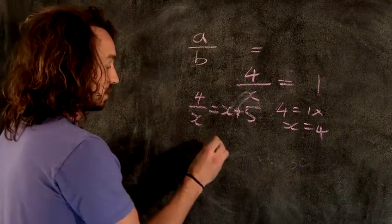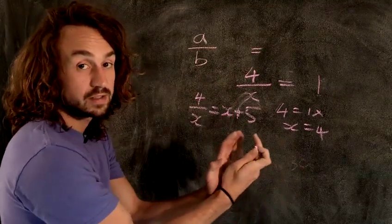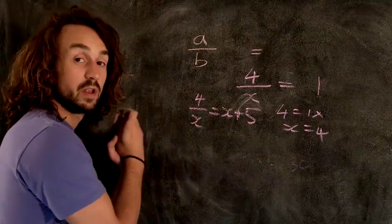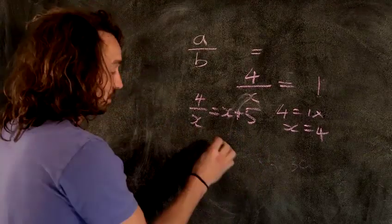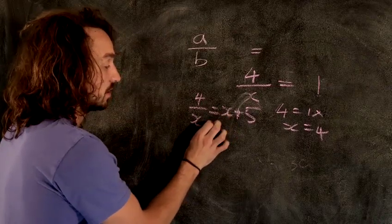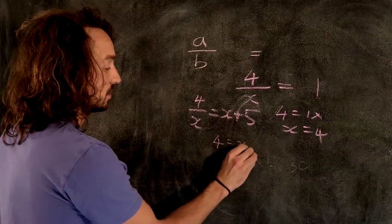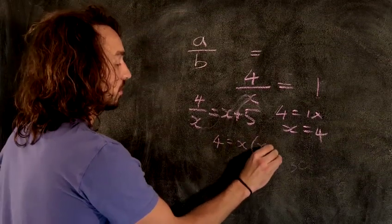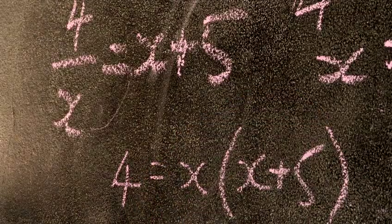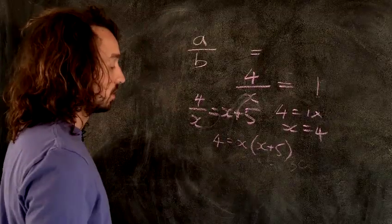But what I mustn't do is just multiply one of these terms by X. I have to multiply the entirety of that right hand side by whatever I multiply the entirety of the left hand side by. So if I multiply both sides by X, this X swings up to here. So I end up with four equals X times all of the right hand side, X plus five. All of it, not just the first term, that's a common mistake. You must multiply by the whole lot.